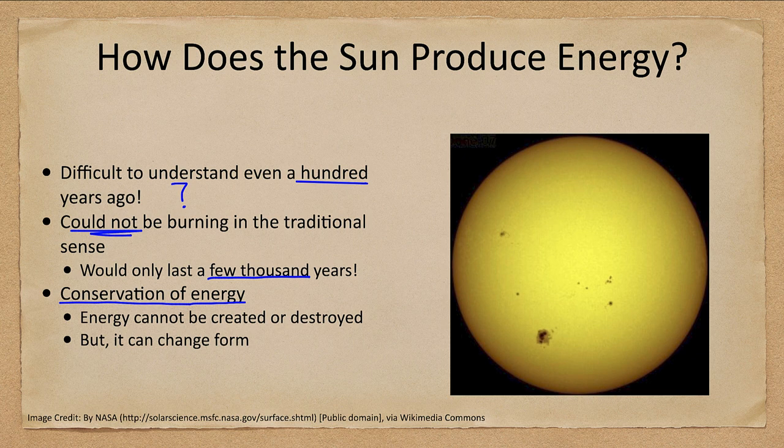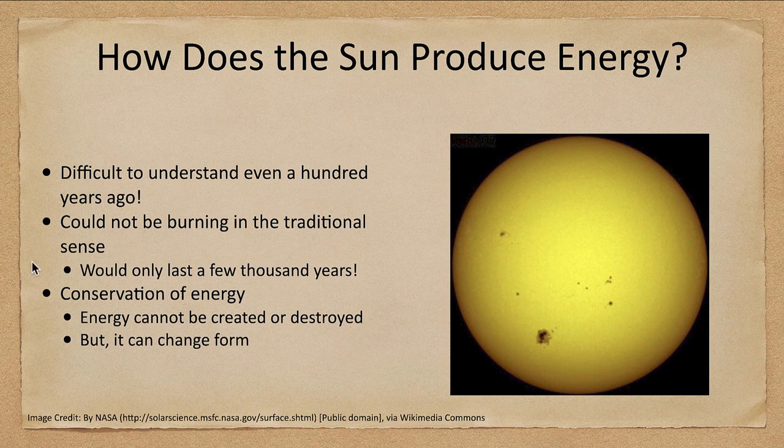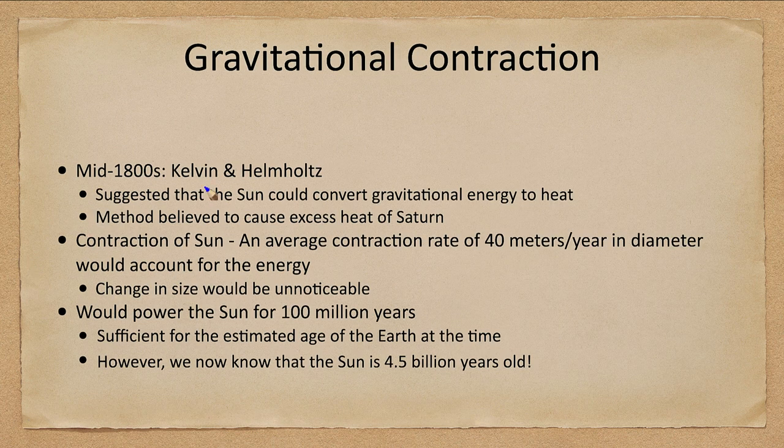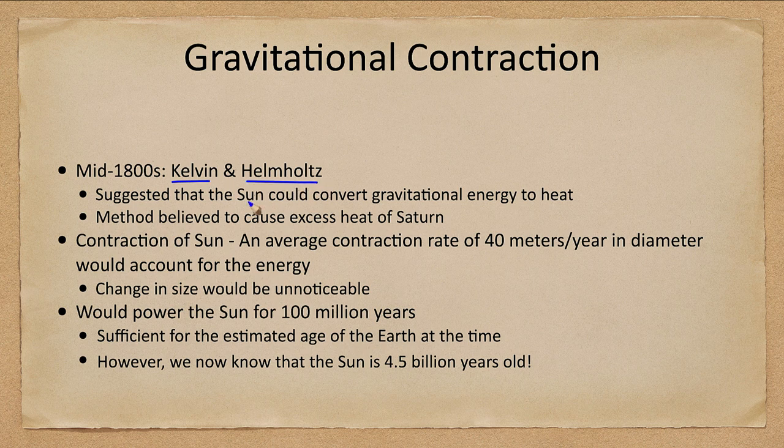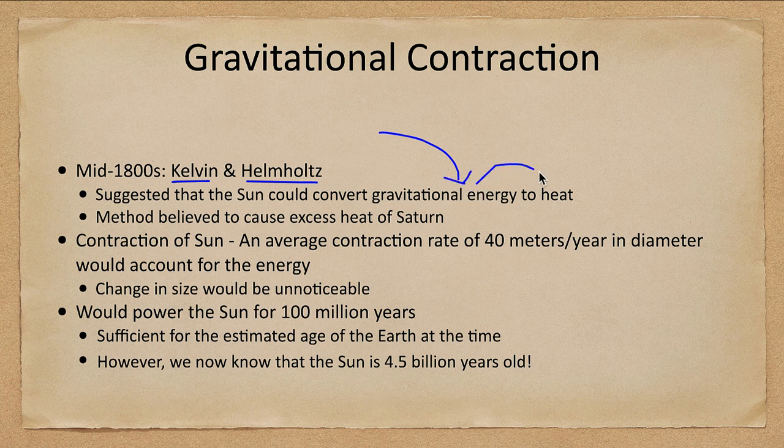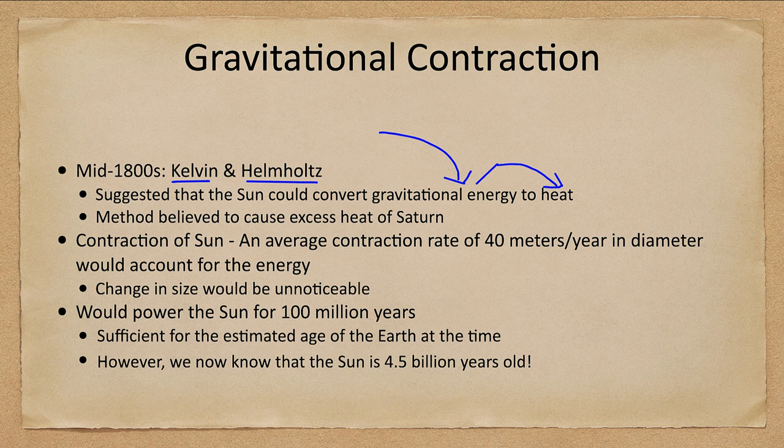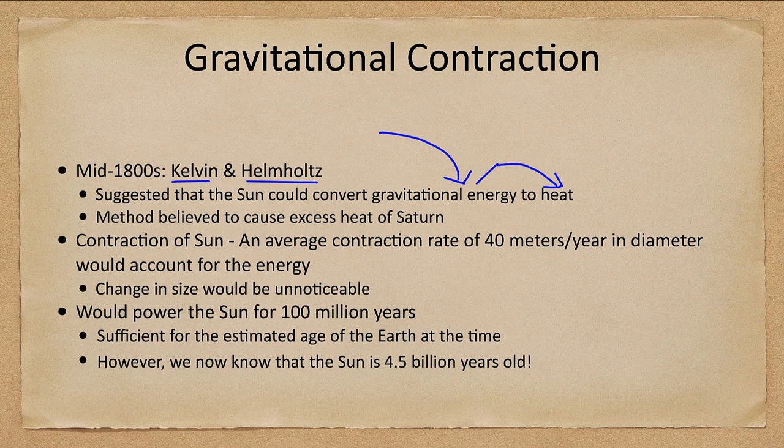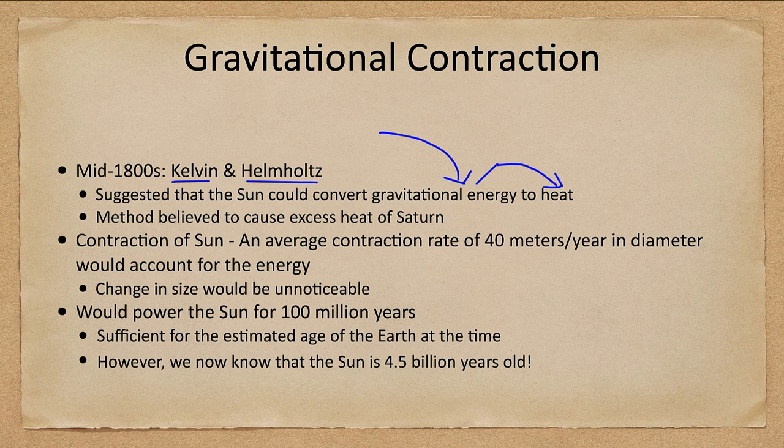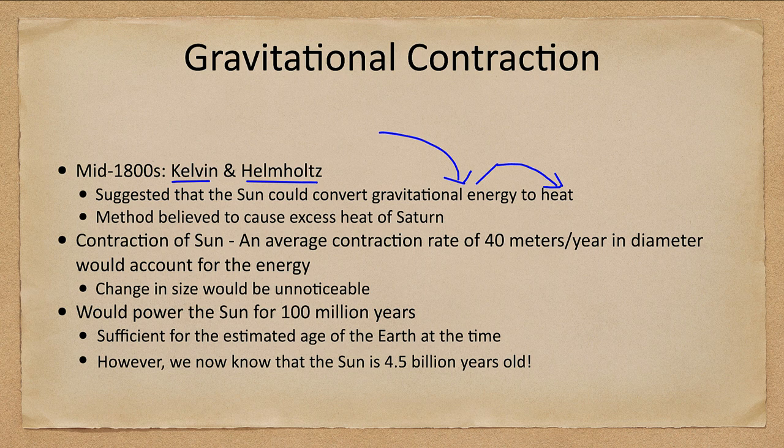This was one of the early thoughts as to how the Sun might be powered in the mid-1800s by Kelvin and Helmholtz. They suggested that the Sun could convert gravitational energy into heat. If you take an object and lift it up in the air it has potential energy. If you drop it, it will lose potential energy and gain kinetic energy or energy of motion. When it strikes the ground it will convert that energy of motion into heat and sound energy. So the same amount of energy is always conserved.